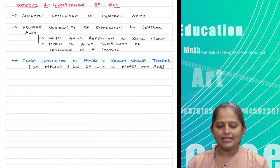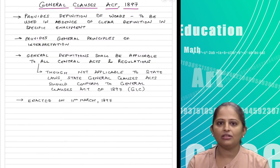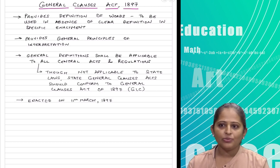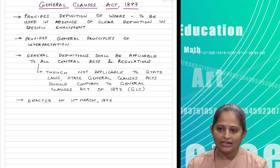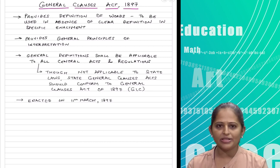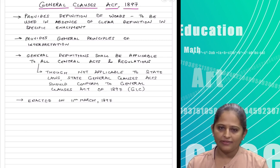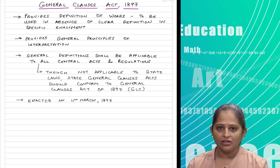The General Clauses Act is a generic act. You have the Indian Contract Act, the Companies Act which deals with companies, the Negotiable Instruments Act which deals with negotiable instruments. The General Clauses Act deals with generic things — definitions which are not provided in the specific act, general terminology not given in the specific act. It basically avoids repeating the same things in every act, shortens the language of specific acts, and provides general provisions applicable everywhere.